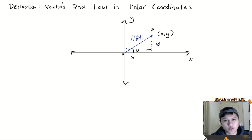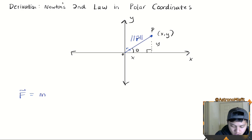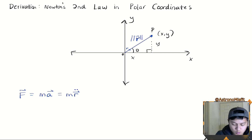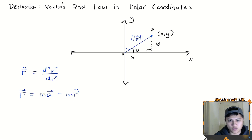Hi there, my fellow intellectuals. Today we're going to be deriving Newton's second law in polar coordinates. Hopefully we all remember that Newton's law says that F is equal to mass times acceleration, which is always just equal to mass times the second derivative of the position vector. The two dots on top of that r vector indicate we want to take the time derivative — this is shorthand notation for the second time derivative of the position vector.